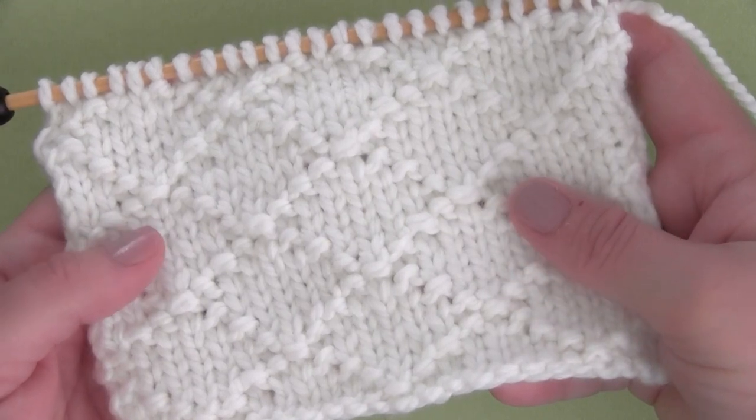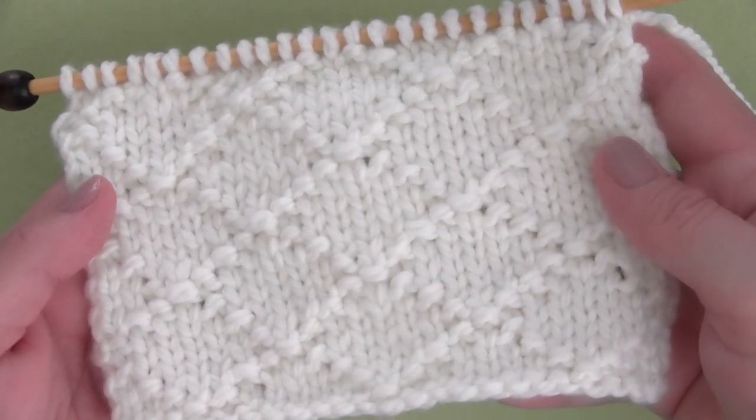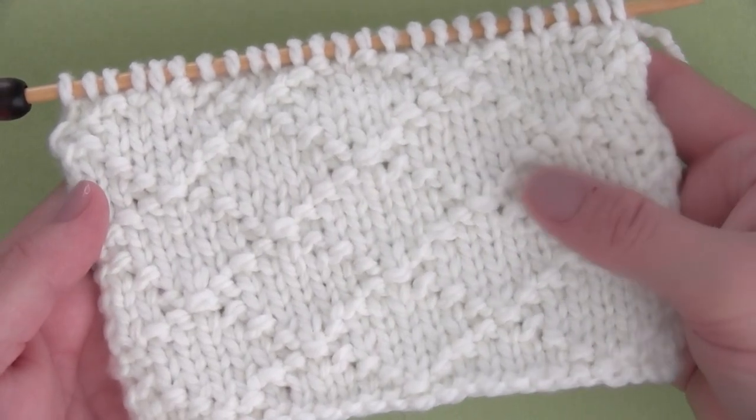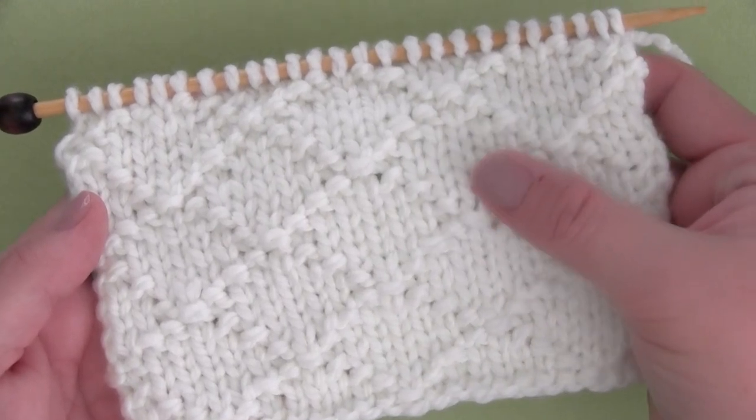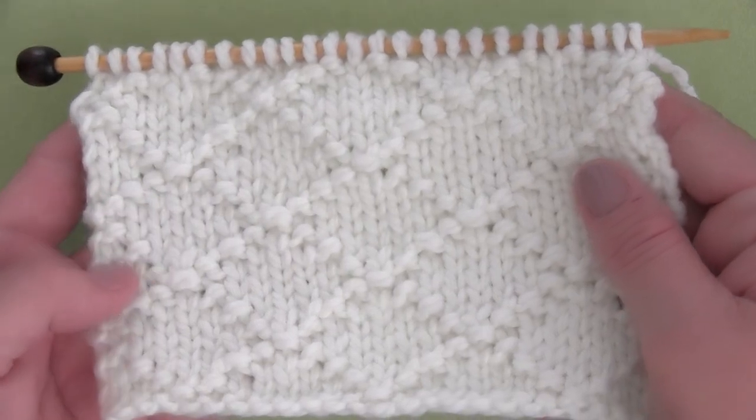And I hope you are inspired to knit up this Diamond Brocade knit stitch pattern. I think it would look stunning if you used it to knit up a pillow or blanket. And even with just one yarn color, it would look really impressive with this texture as part of your home décor.